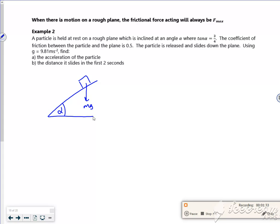If we let go of it, the particle is released and slides down the plane. It's going to go that way, so my friction is acting against it: F_r or F_max. I've got my mg.